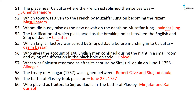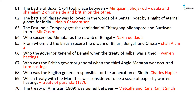Ahmed Shah Abdali appointed Alamgir II as the Mughal Emperor in 1756. The Portuguese governor who captured Goa in 1510 was Alfonso de Albuquerque. The place near Calcutta where the French established themselves was Chandernagore. The town given to the French by Muzaffar Jung on becoming the Nizam was Masulipatnam. Bussy raised Salabat Jung as the new Nawab on the death of Muzaffar Jung. The fortification of Calcutta acted as the breaking point between the English and Siraj ud-Daulah.